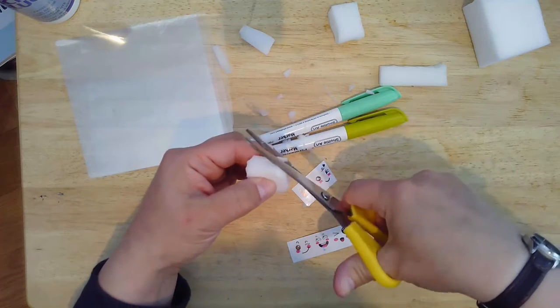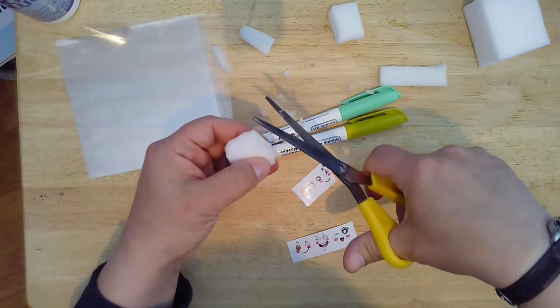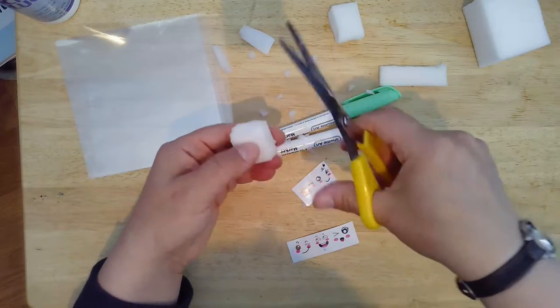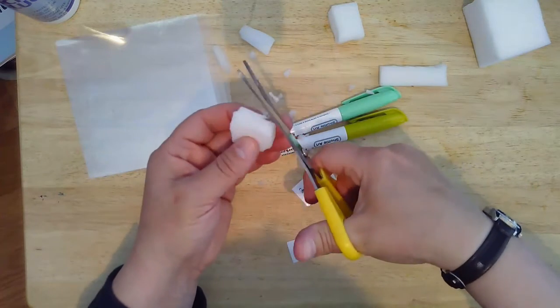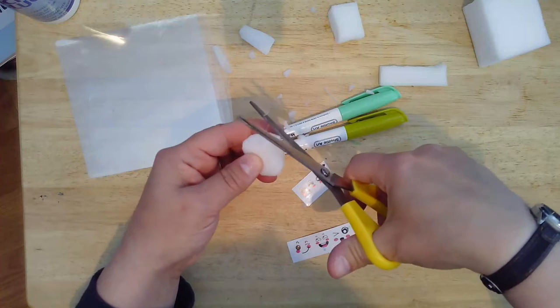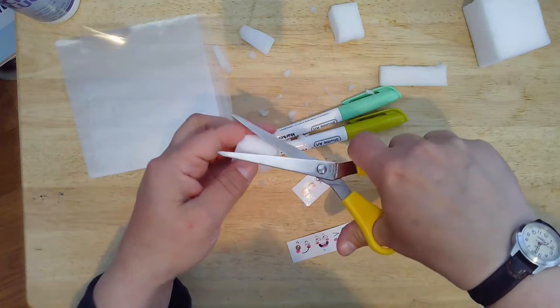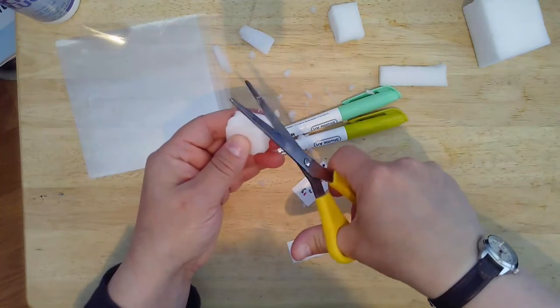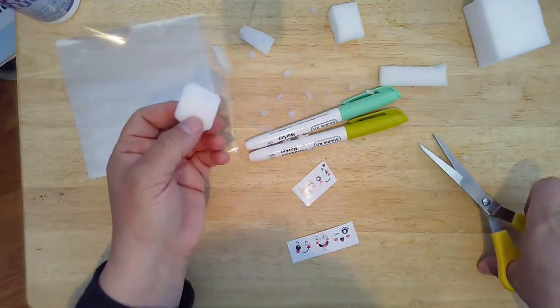As you're trimming, just take a look at each different side. Make sure it's nice and smooth and doesn't have any bits of foam sticking out. It'll make it easier to color the candy in a little bit. All right.